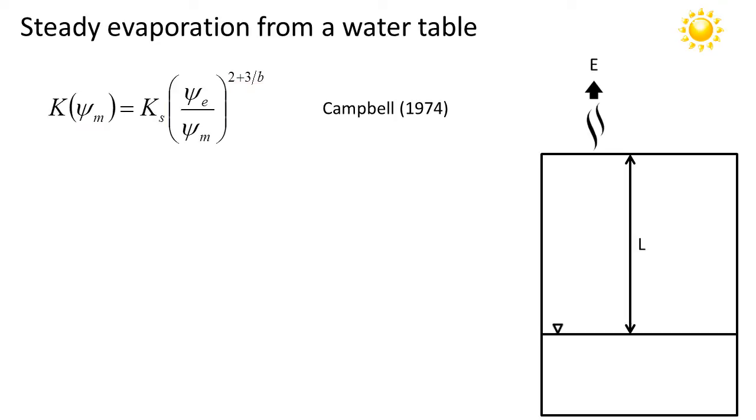So we'll just plug this Campbell model into our prior equation. This is the result. Now notice that I've written uppercase N for the exponent. Just remember that N is equal to 2 + 3/b where b is the Campbell exponent. Now we're ready to integrate our equation.